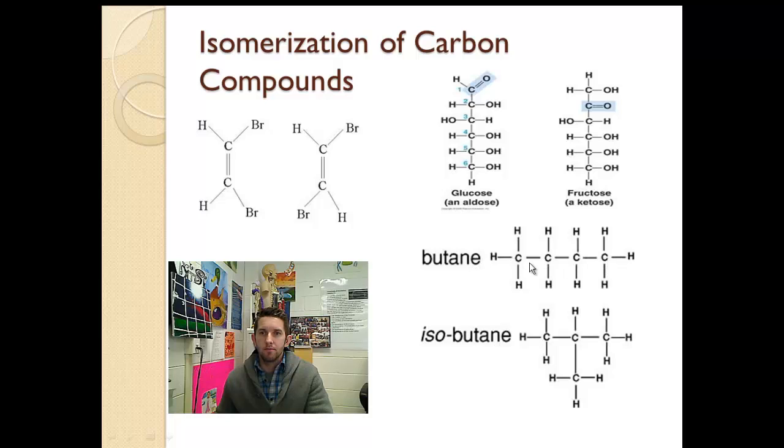Once again, butane, four carbons going across, same for isobutane, but we have one of the carbons instead of being in a branch of four, where the longest branch of carbons is four, the longest branch of carbons in isobutane is three. So the behavior is completely different. This is an isomer.